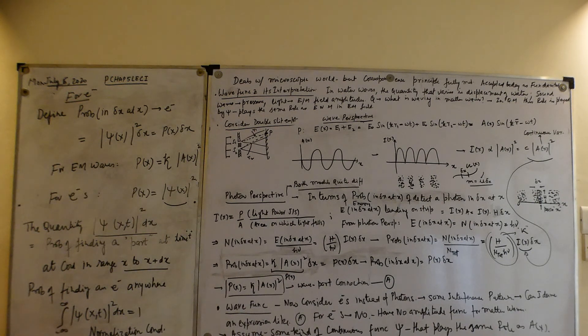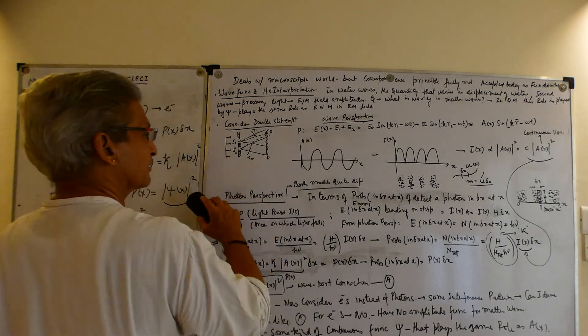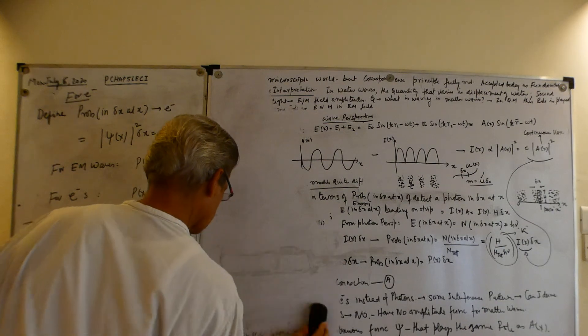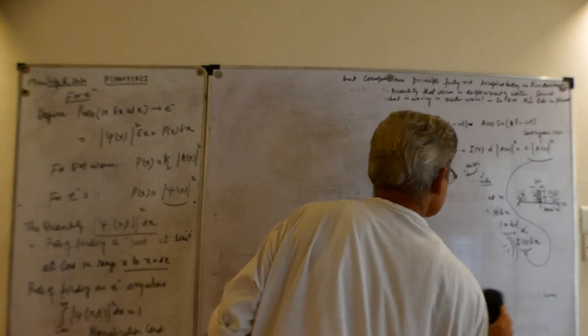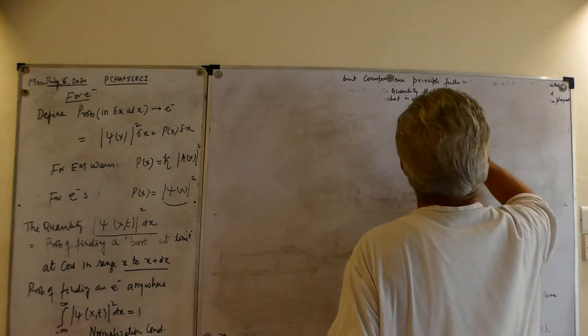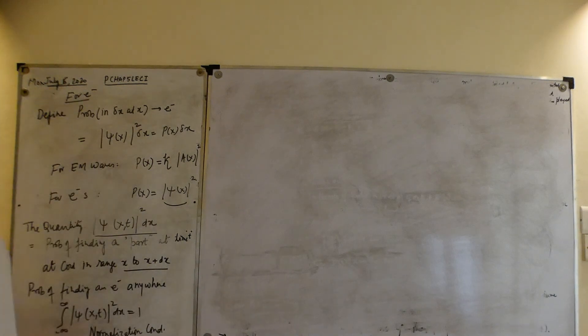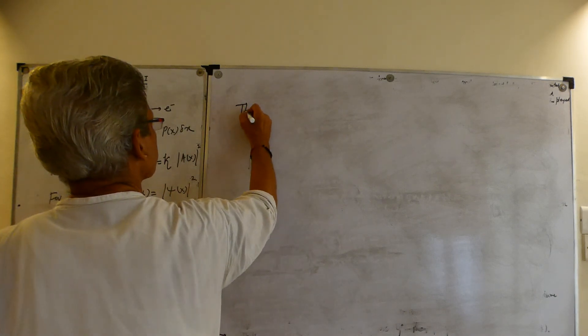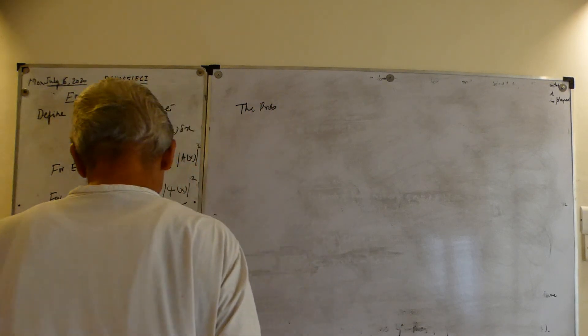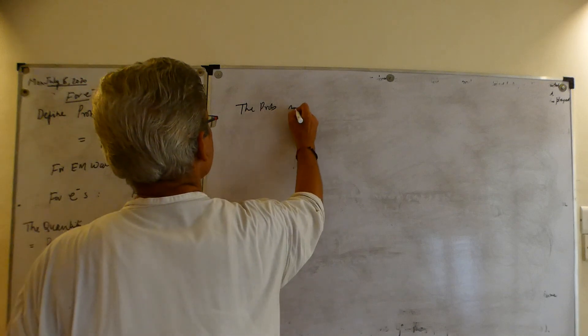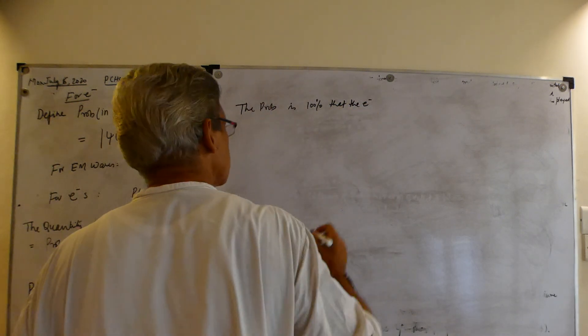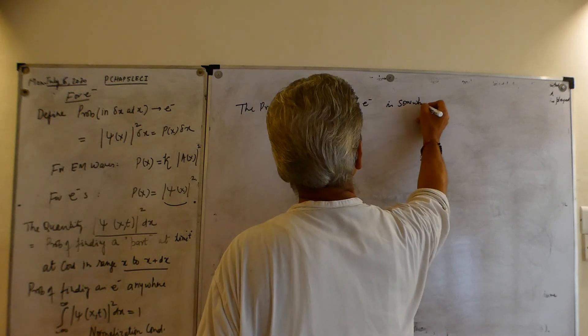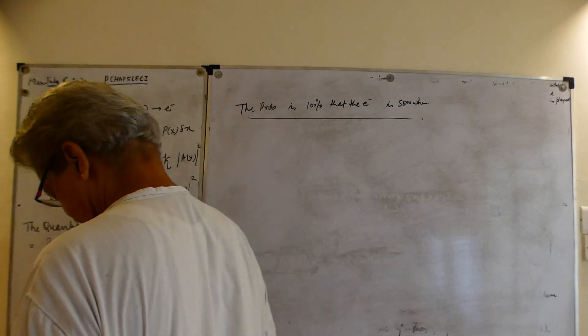So what it means is that the probability is 100% that the electron is somewhere. That's what it is.